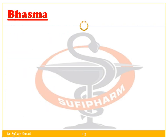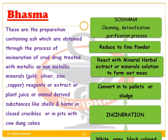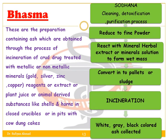Next is Bhasma — these are preparations containing ash obtained through the process of incineration of crude drugs treated with metallic or non-metallic materials. Minerals used include gold, silver, zinc, and copper, along with reagents or extracts or plant juice or animal-derived substances like shell and horn, incinerated in a closed crucible or in a pit with cow dung.